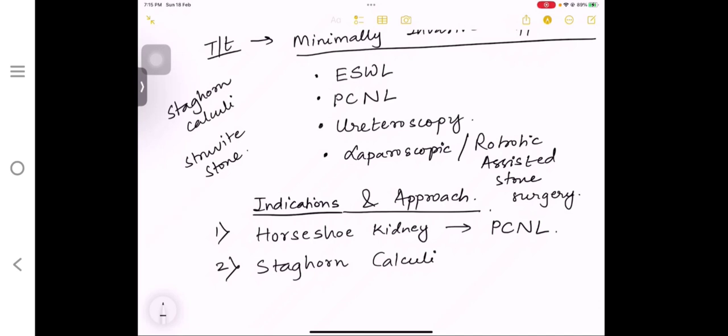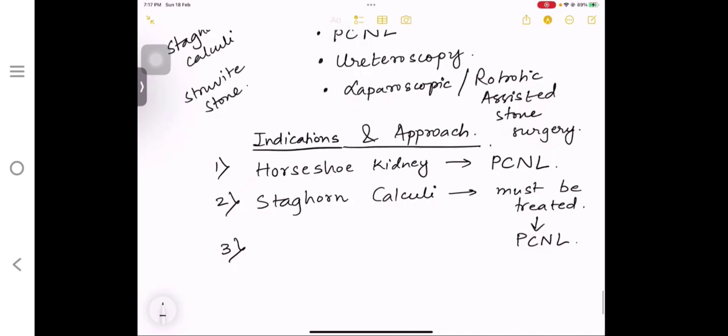Let us see which method we will use in which case. Suppose there is a patient with horseshoe-shaped kidney or staghorn kidney, then you have to do PCNL. If the patient is asymptomatic, then you have to outweigh the risk of intervention and the conservative therapy, and then you have to proceed accordingly.